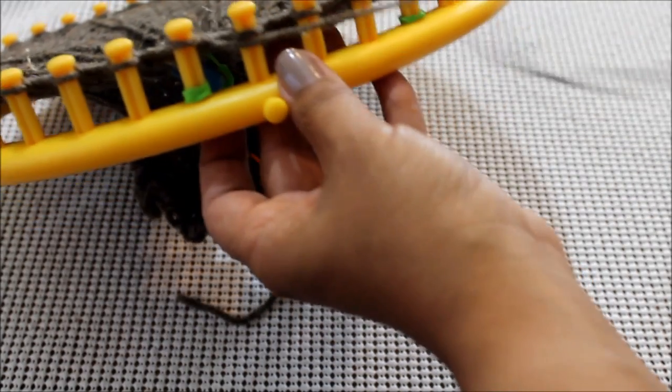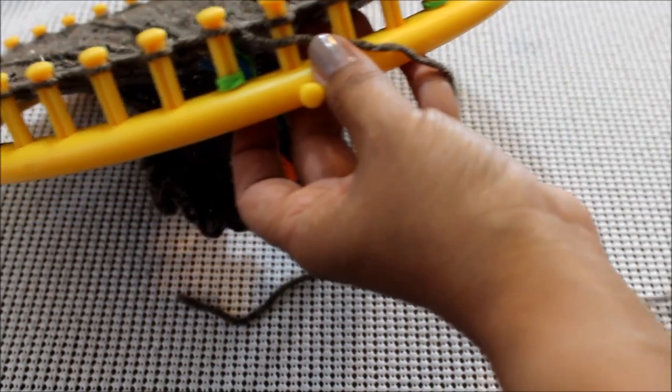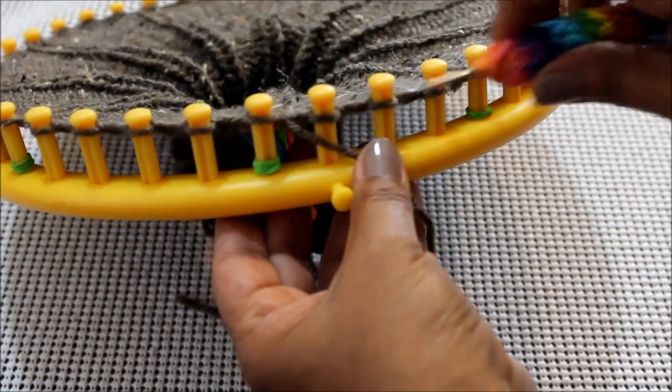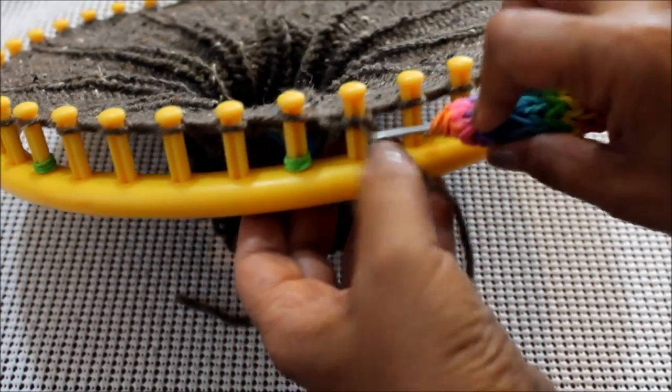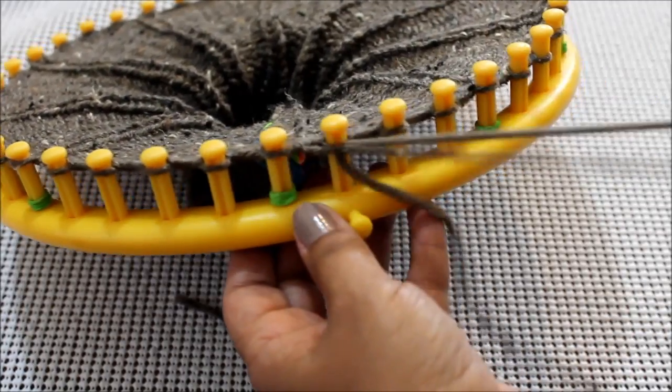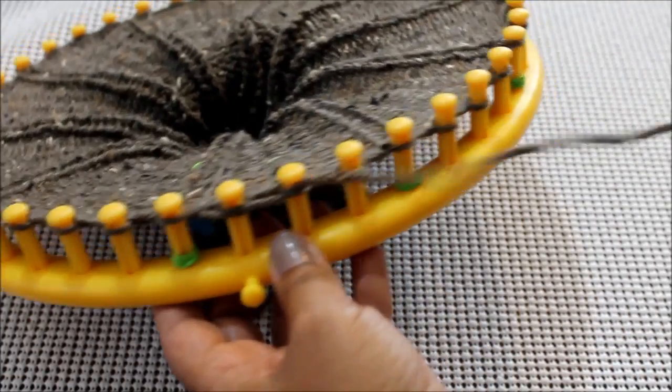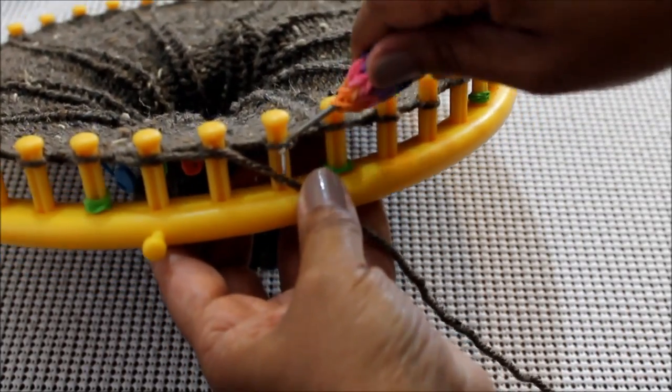And then there's more than one way to do this. We're going to use the gathered method to bind off and you can use your hook. All you have to do is come from the top, scoop up the yarn, and feed it through the loop. This is one way to do it.